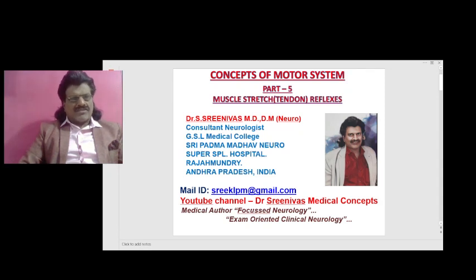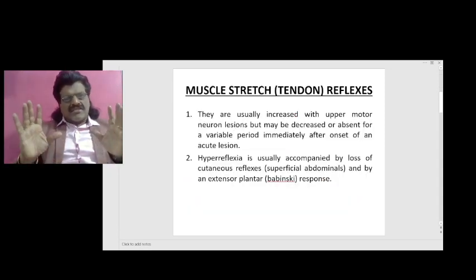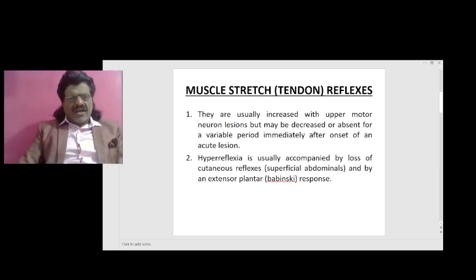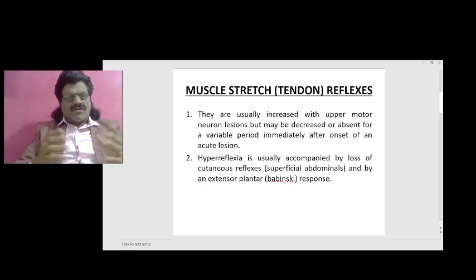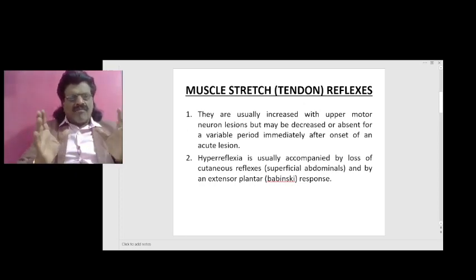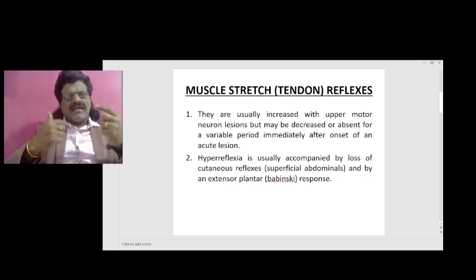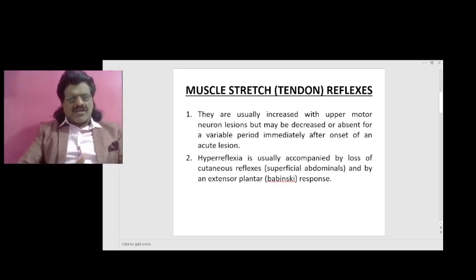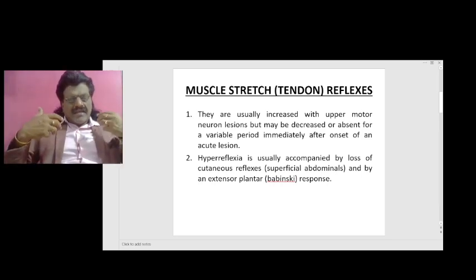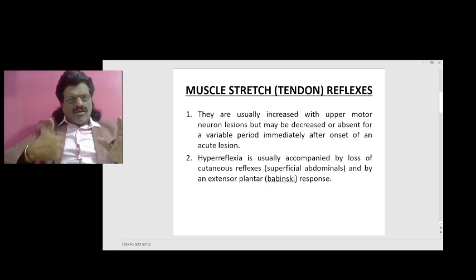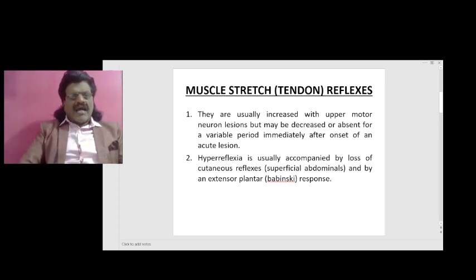The muscle stretch reflexes are usually increased with upper motor neuron lesions, but may be decreased or absent for a variable period immediately after the onset of an acute lesion. The hyperreflexia is usually accompanied by loss of cutaneous reflexes — that is, superficial abdominals — and by an extensor plantar response, that is, Babinski sign.